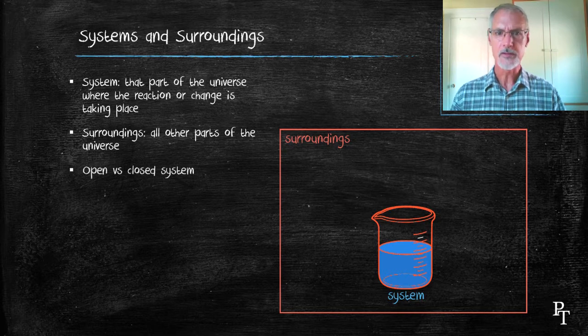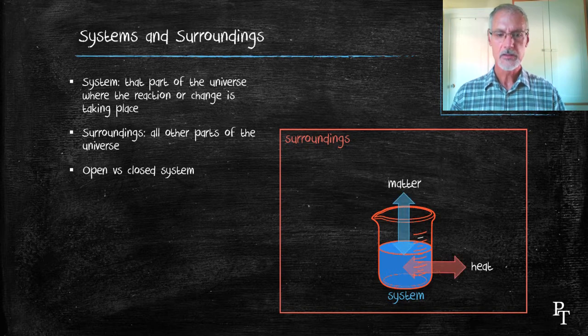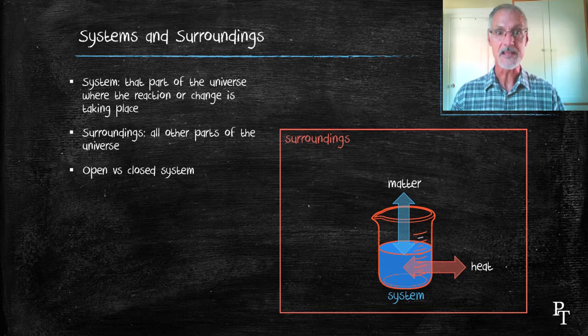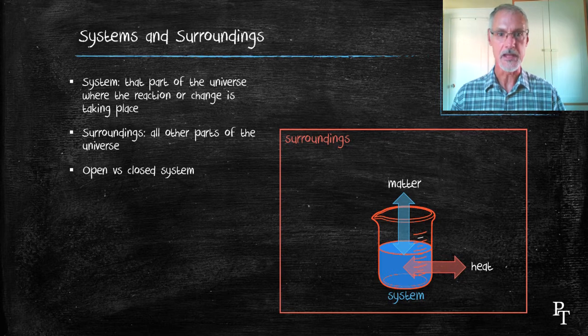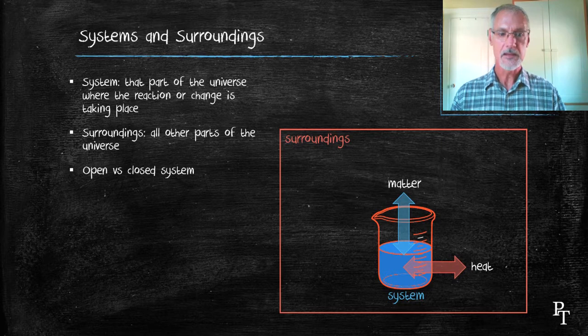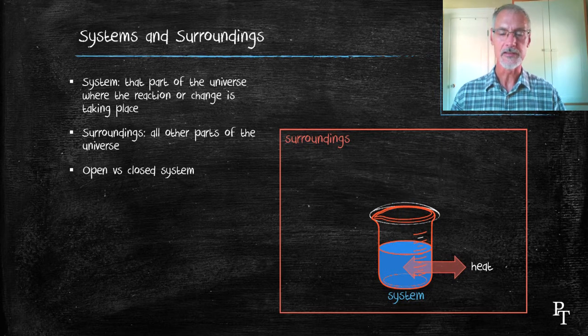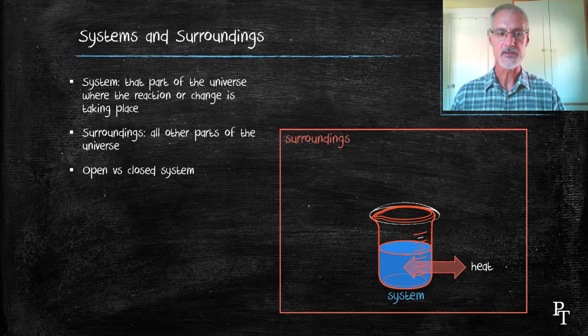A little bit about an open and a closed system. In an open system, we're able to exchange with both the surroundings and the system both matter and heat. So substances could move from the surroundings into the reaction or from the reaction out. And likewise, heat could move in and out of the reaction. In a closed system, we put a lid on the container. That doesn't allow us to exchange matter. All we can exchange is the heat.